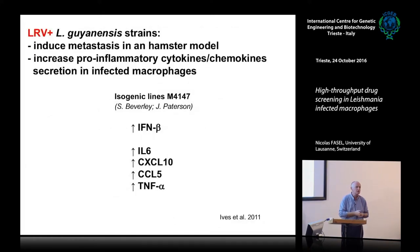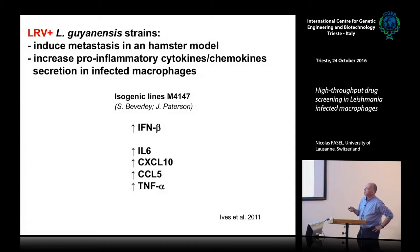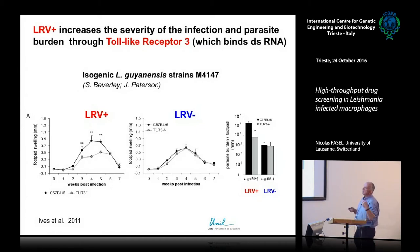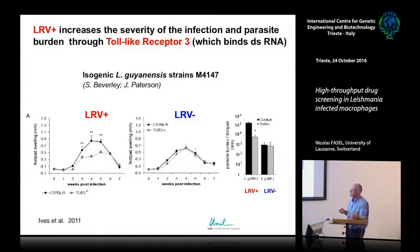When you have LRV in L. guyanensis, what happens is you have an increase in inflammation. We showed some years ago that you have an increase in production of interferon beta and inflammatory cytokines and chemokines which are upregulated when LRV is present. This has a strong effect on foot pad lesion size — in wild-type mice infected with LRV-plus, removing toll-like receptor 3 decreases the size of the lesion, and you have no difference if the virus is absent. You also see a decrease in the number of parasites in the foot pad.